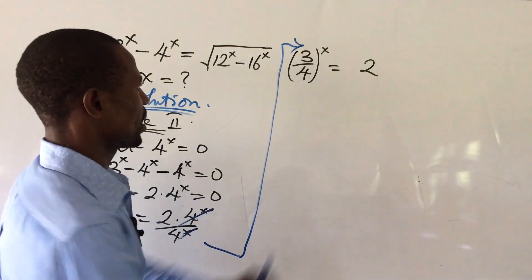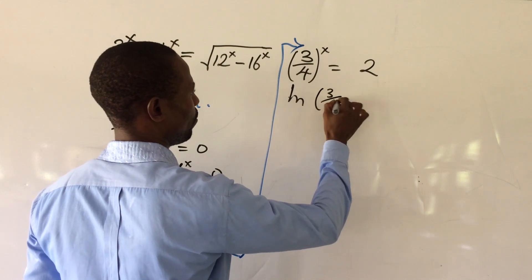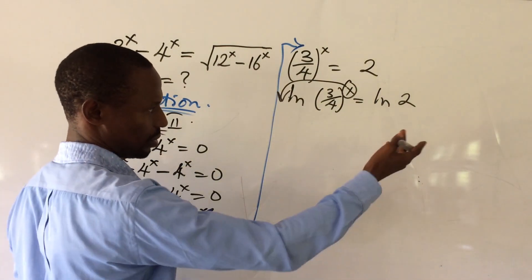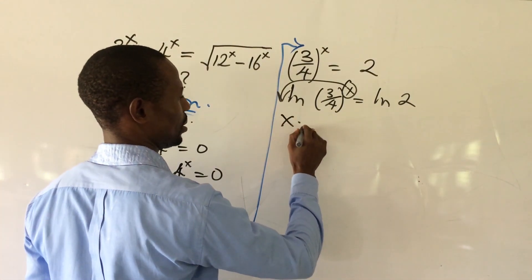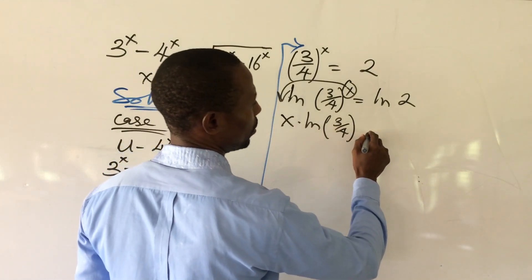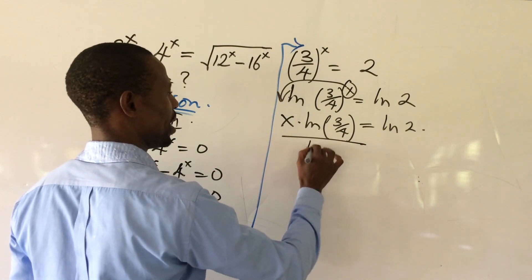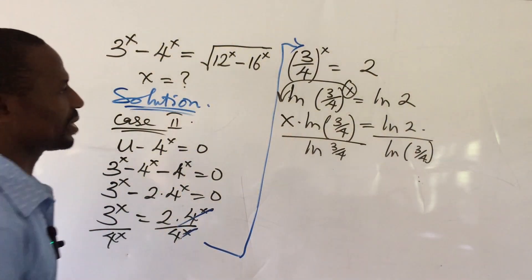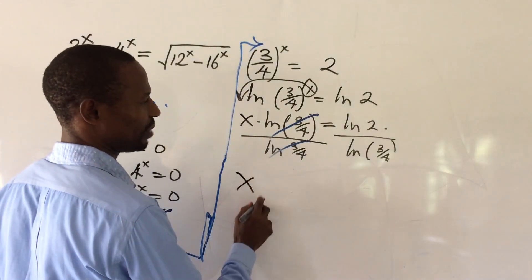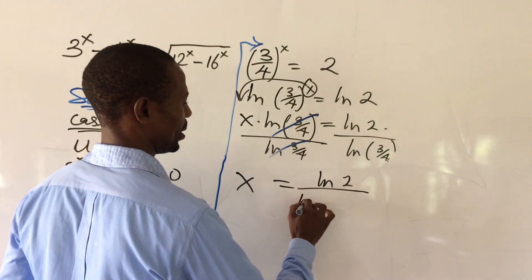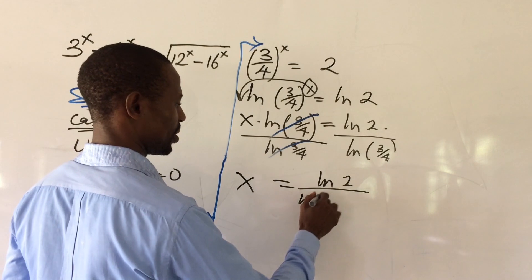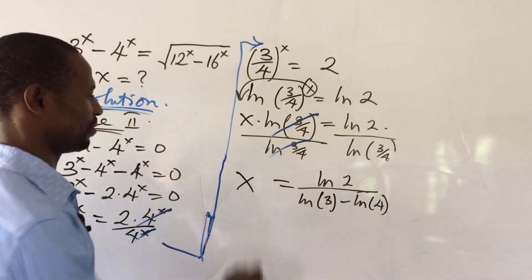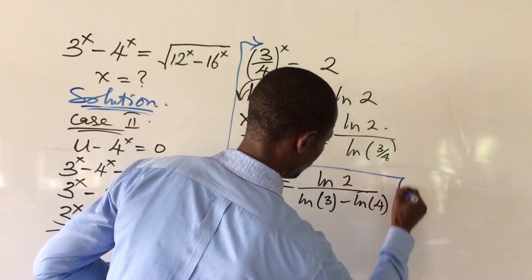We have (3/4)^x equals 2. Taking the natural log of both sides: ln((3/4)^x) equals ln(2). Moving the exponent backward: x · ln(3/4) equals ln(2). Dividing both sides by ln(3/4), and applying the divisional law of logarithms, we get: x₂ equals ln(2) divided by (ln(3) minus ln(4)).